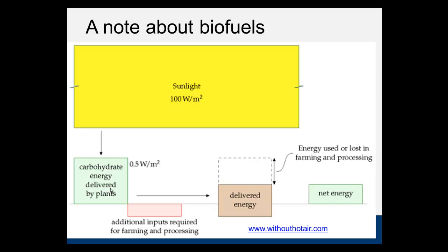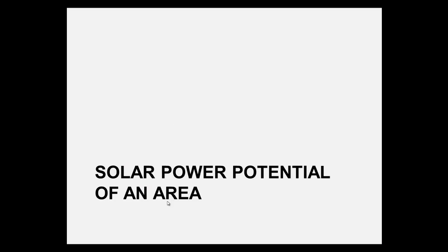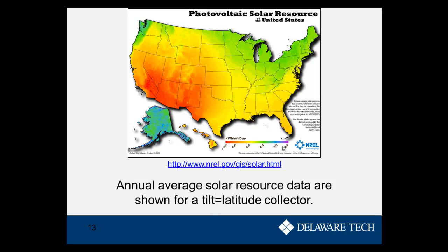Now that we know what we can do with solar power, let's look at the solar power potential of an area. The first thing we want to examine is how much sunlight hits that area. Since you're doing projects for one of the United States, we'll look at a US map. These maps are produced by NREL and are available at their website.